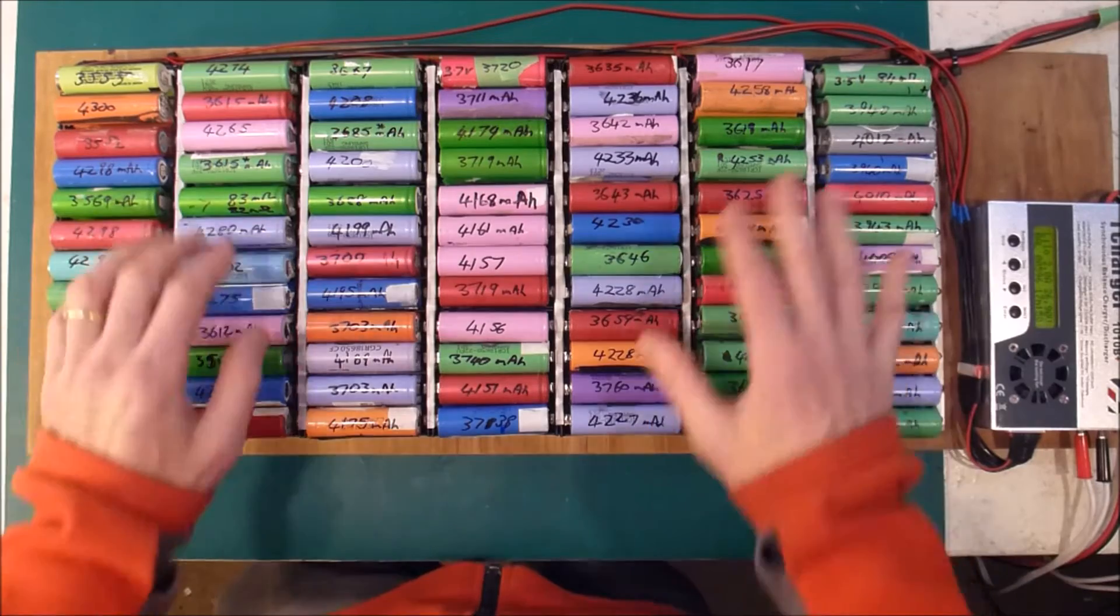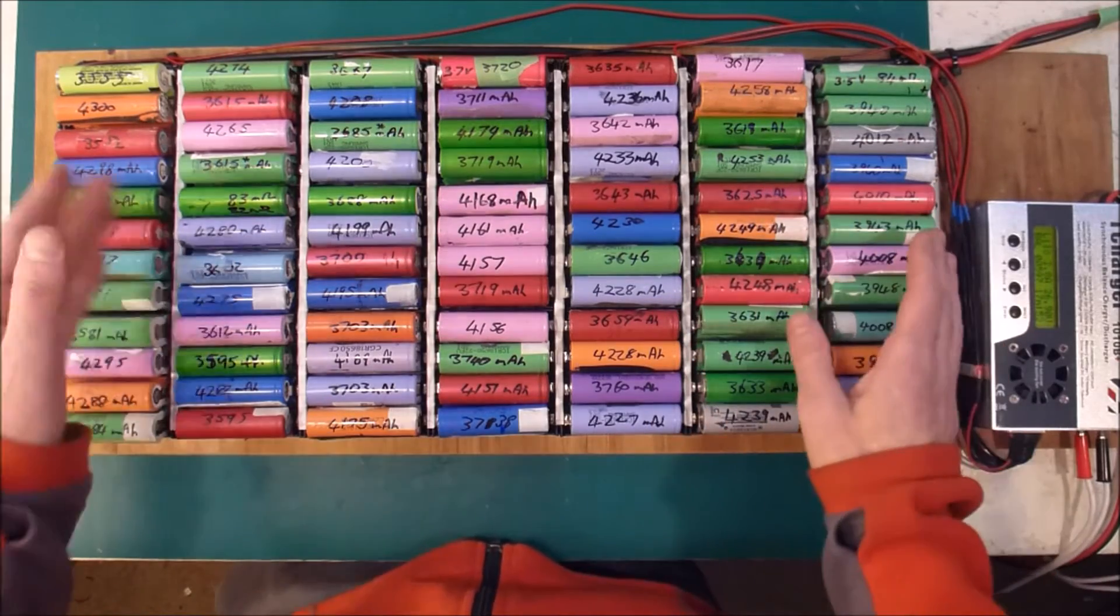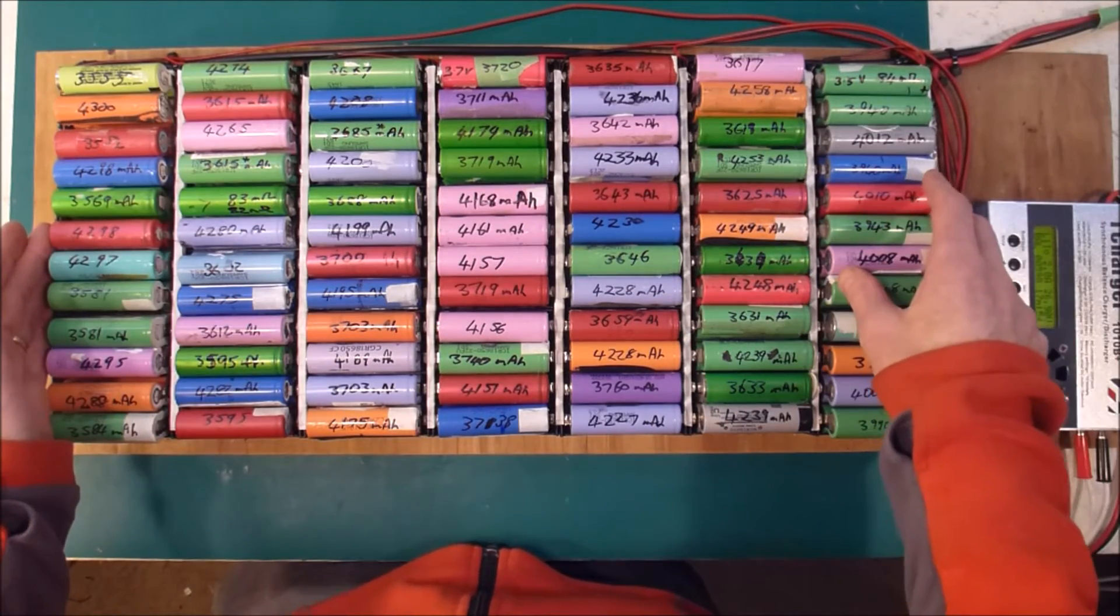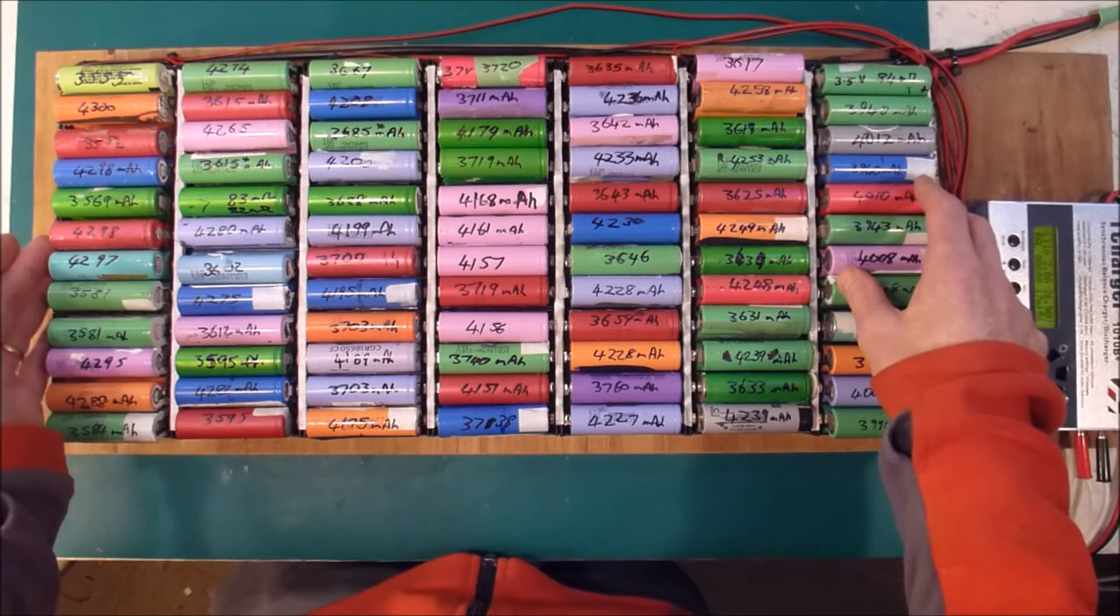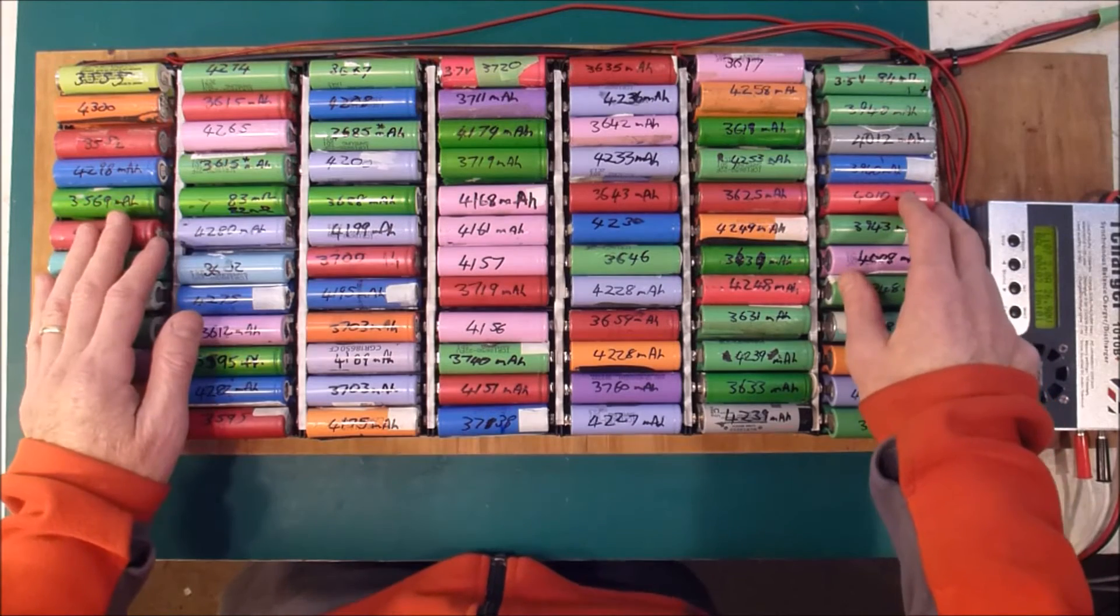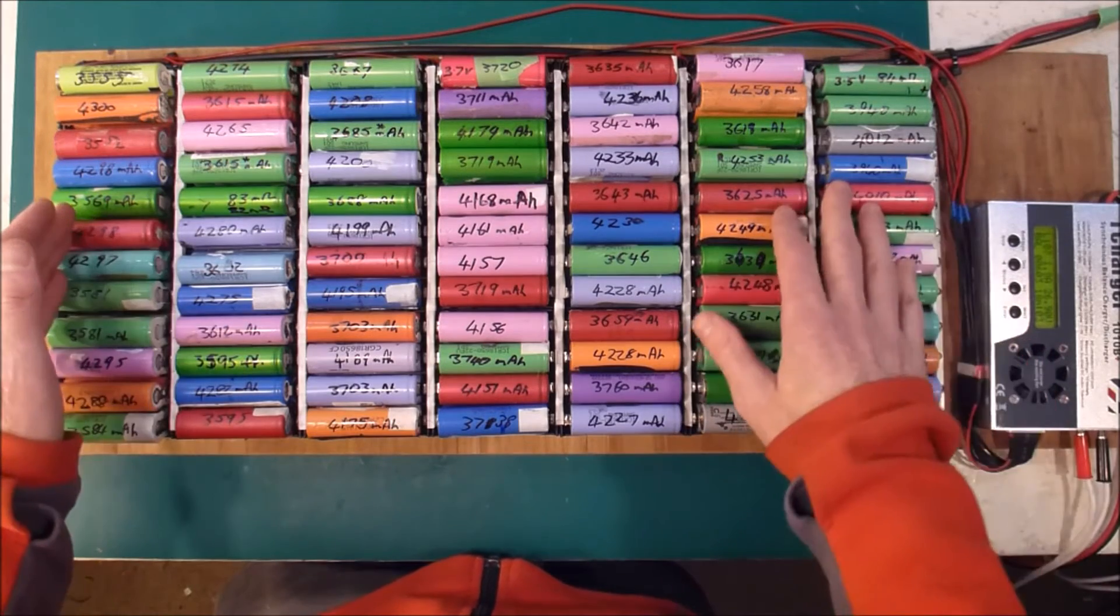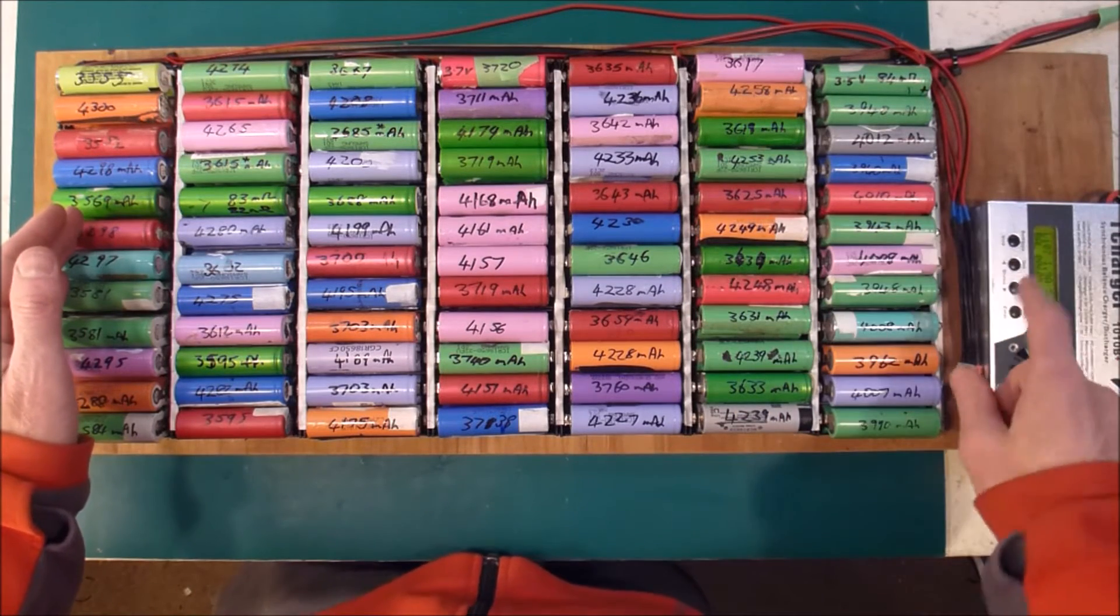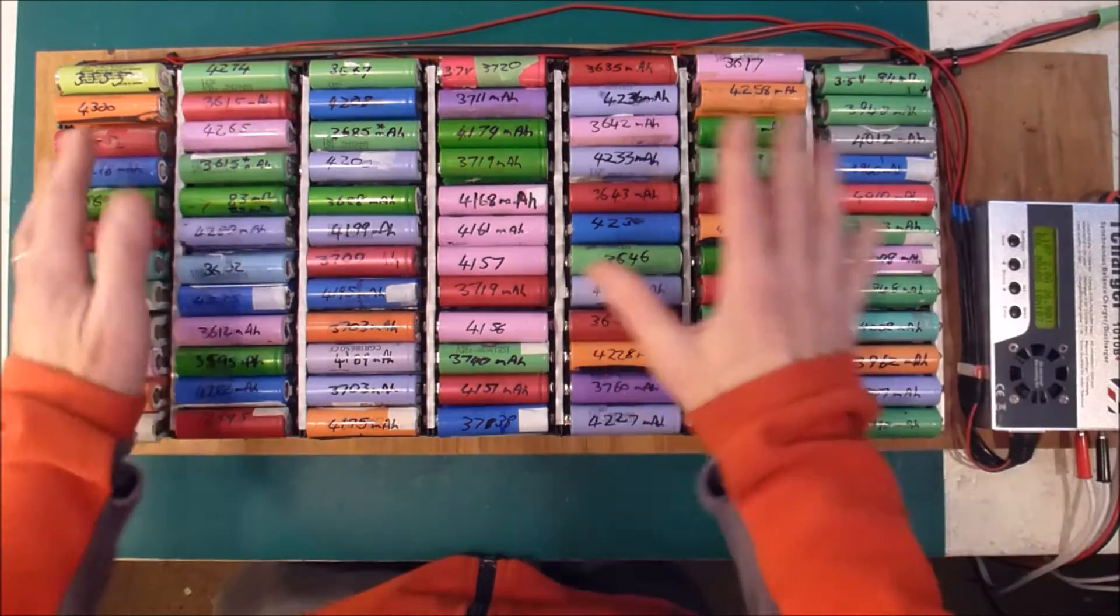And I'm expecting that if I ran this in the solar system, charged it normally without a BMS, without any automatic balancing, I wouldn't expect it to drift out of whack that often. And when it does, I can just use the iCharger to rebalance it.